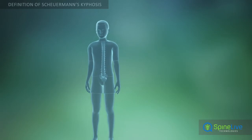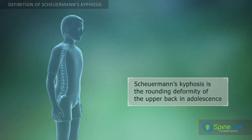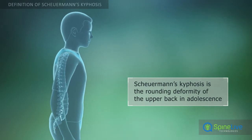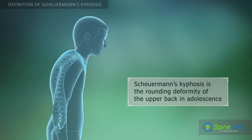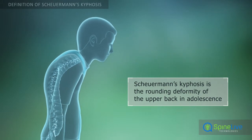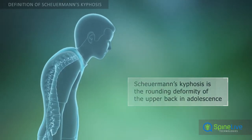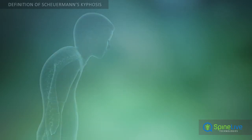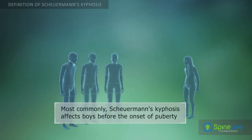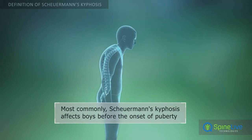Normally, the human upper spine has a mild forward rounding, but in some cases it can be exaggerated. This pathological condition is called kyphosis. Kyphosis of unknown etiology, which begins in adolescence before puberty, is called Scheuermann's disease. Scheuermann's kyphosis is more common in boys than in girls and continues to worsen with age.